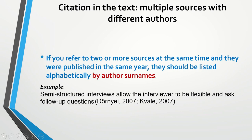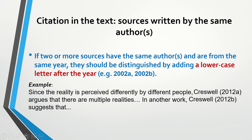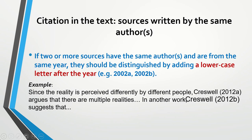If you refer to two or more sources at the same time and they were published in the same year, they should be listed alphabetically by authors' surnames. In this example I have two sources published in the same year, 2007, so I order them alphabetically — Journey comes first. If two or more sources have the same author and are from the same year, they should be distinguished by adding a lowercase letter after the year. For example, Cresswell 2012a and Cresswell 2012b — this means Cresswell published two works in 2012, and A and B distinguish them.